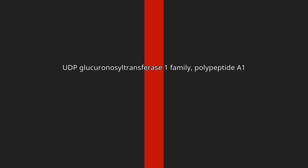UDP-glucuronosyltransferase 1 family, polypeptide A1. UDP-glucuronosyltransferase 1-1, also known as UGT1A1, is an enzyme that in humans is encoded by the UGT1A1 gene.